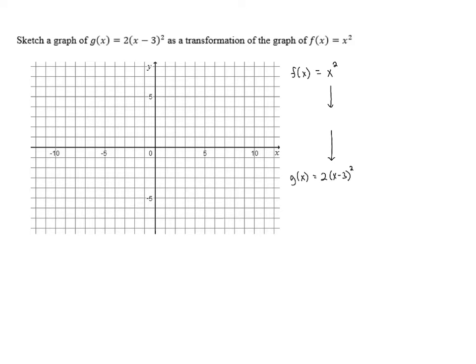The first thing we can do: we know that we need this x that's getting squared to turn into x minus 3. So we can turn this into x minus 3 squared by replacing x with x minus 3. We know that this corresponds to a horizontal shift — a shift to the right 3 units.